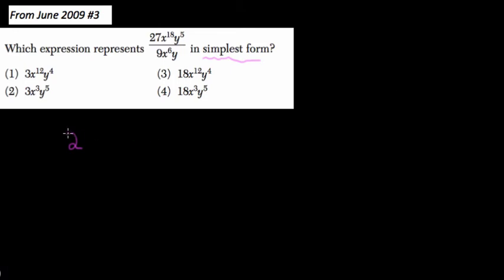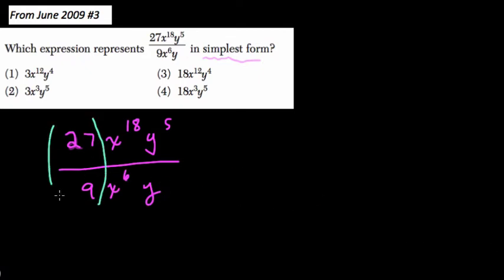So that being said, let's write this out. We have 27x to the 18th, y to the 5th, over 9x to the 6th and y. So something we talked about a lot in the last video is that you can regroup the numbers, the powers of like variables, so the powers of x and the powers of y, to break this down.